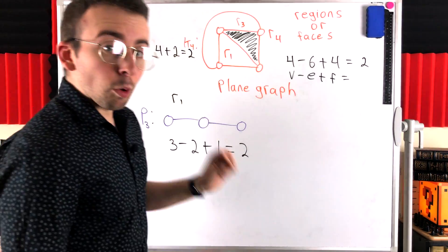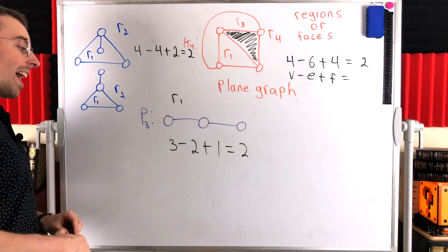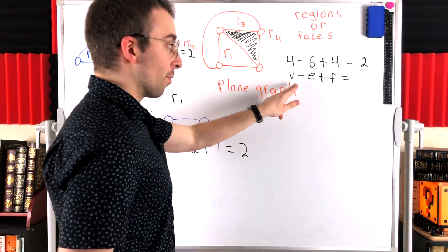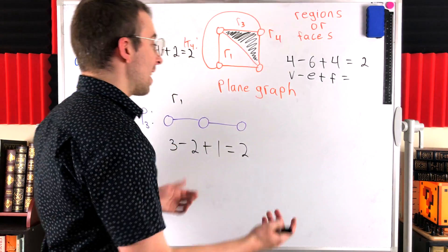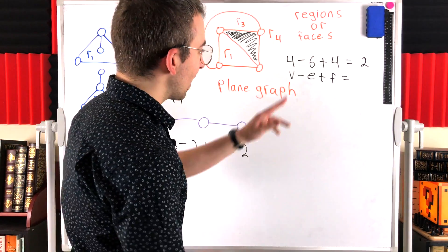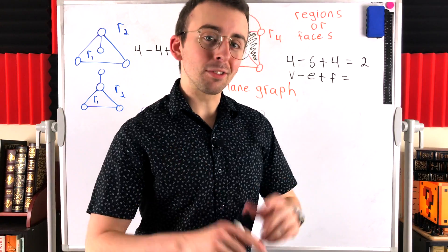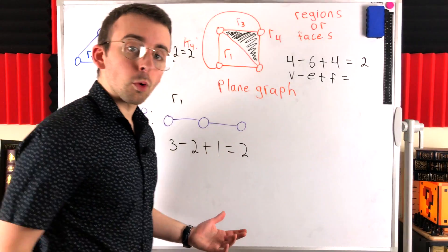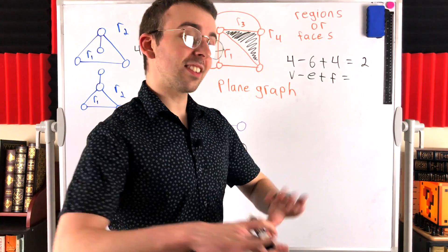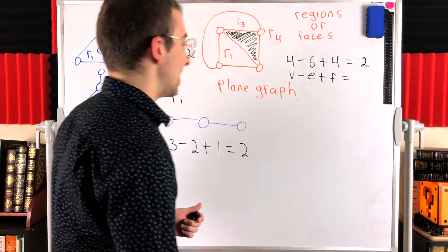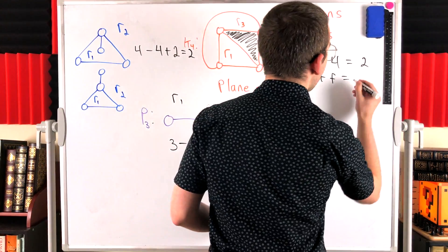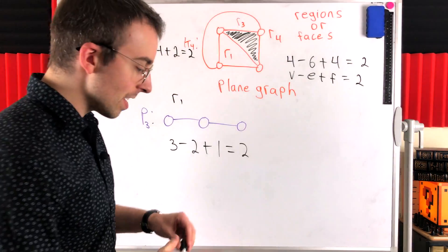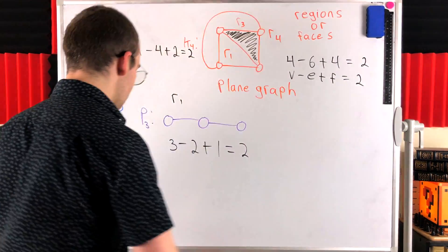This is called Euler's identity or Euler's formula — a pretty useless name since tons of things are named after Euler. But in a connected plane graph, the number of vertices minus edges plus the number of faces always equals two. That'll be one of the exciting proofs we do soon, so be sure to subscribe so you don't miss the video where we prove that.